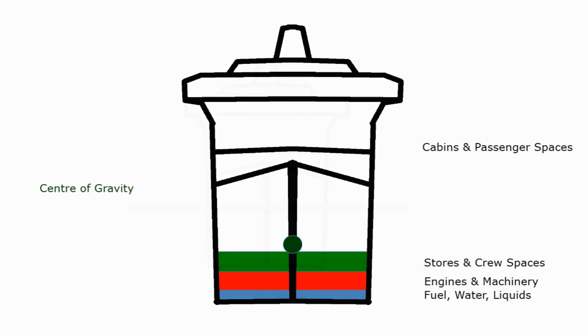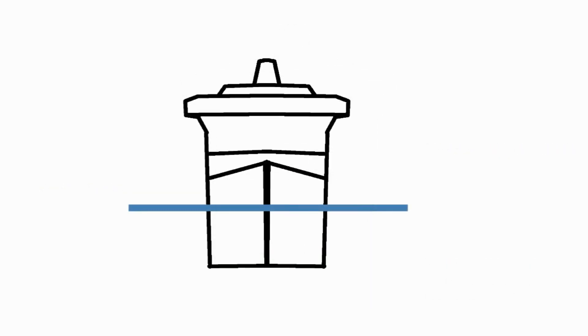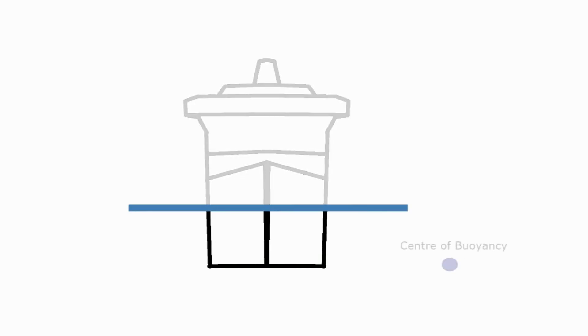But what about the centre of buoyancy? Let's take this diagram now. For the centre of buoyancy of course we're interested in the stuff under the water. And to find the centre of buoyancy all we need is the centre of the water plane area. So it's just the middle of the part of the ship that's under the water.